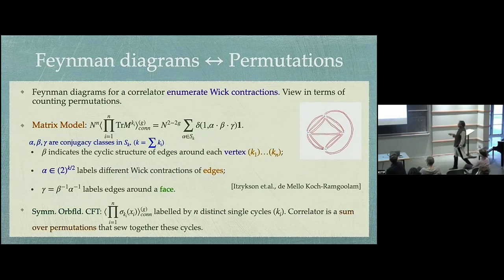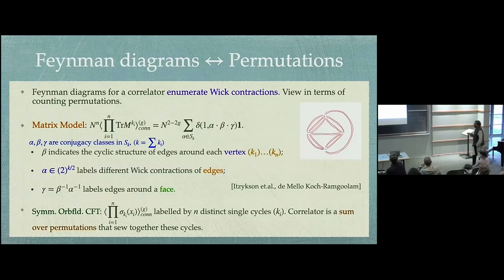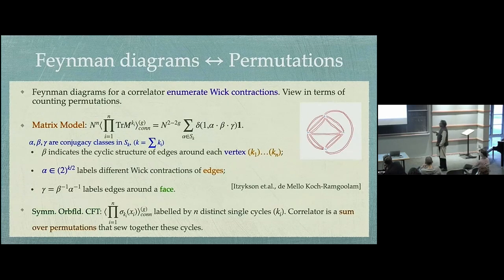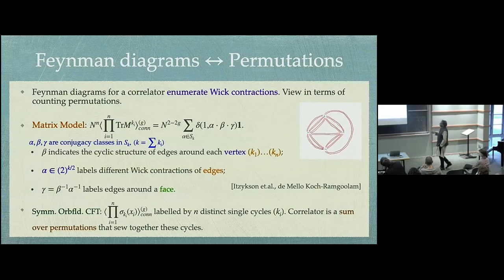There is a third permutation gamma that arises, which is not independent of alpha, because once you specify a Wick contraction you get a permutation associated with how the edges are arranged in a face. So you are summing over all permutations such that there are three permutations whose product is the identity. For the symmetric product, the problem can similarly be reduced to one of permutations, because what you typically compute are operators in twisted sectors, where K_i labels the single cycle of a twisted sector.